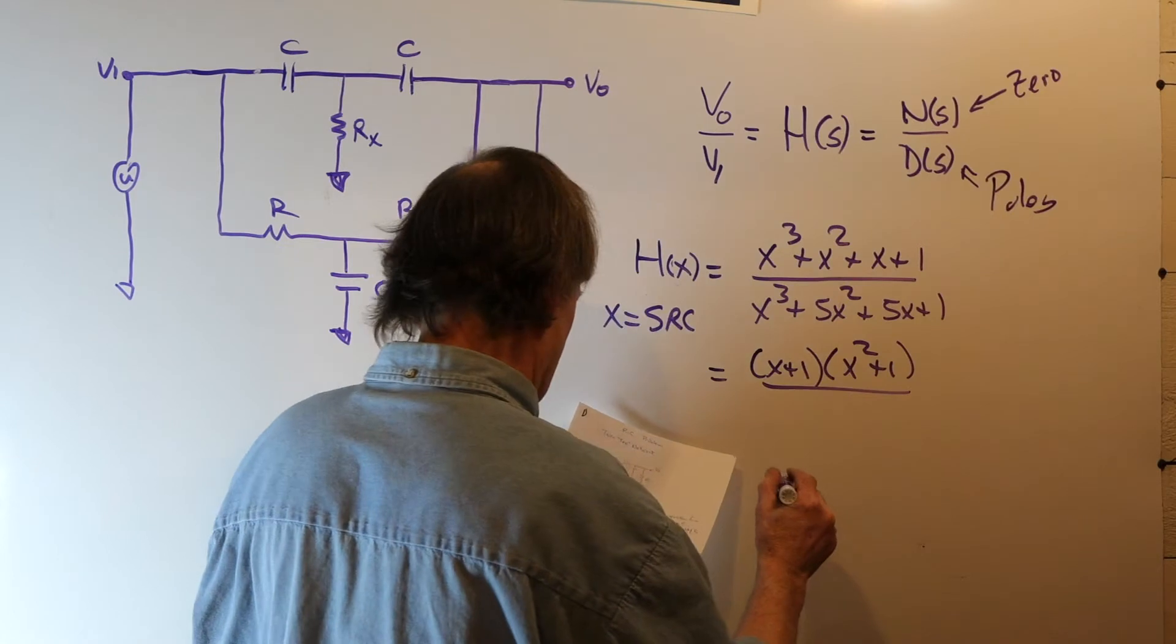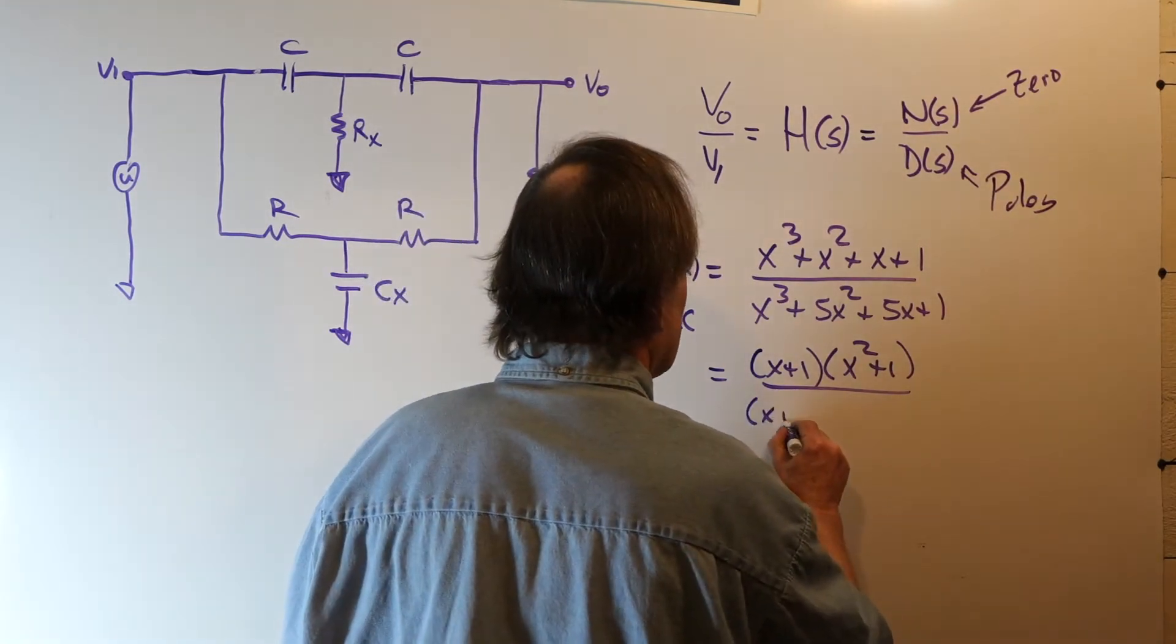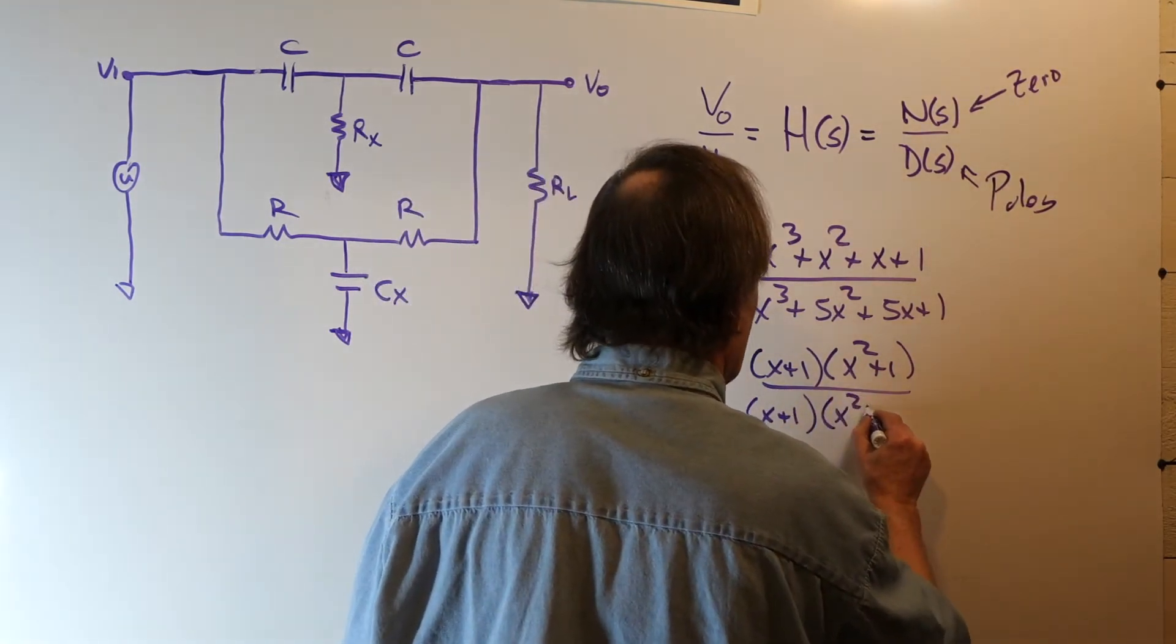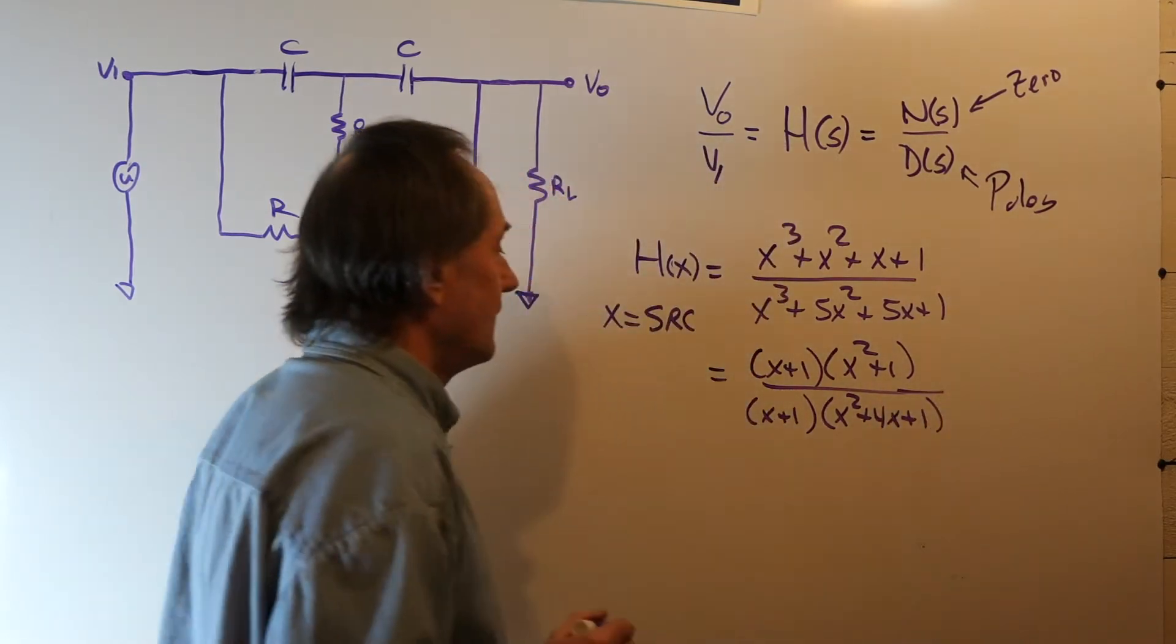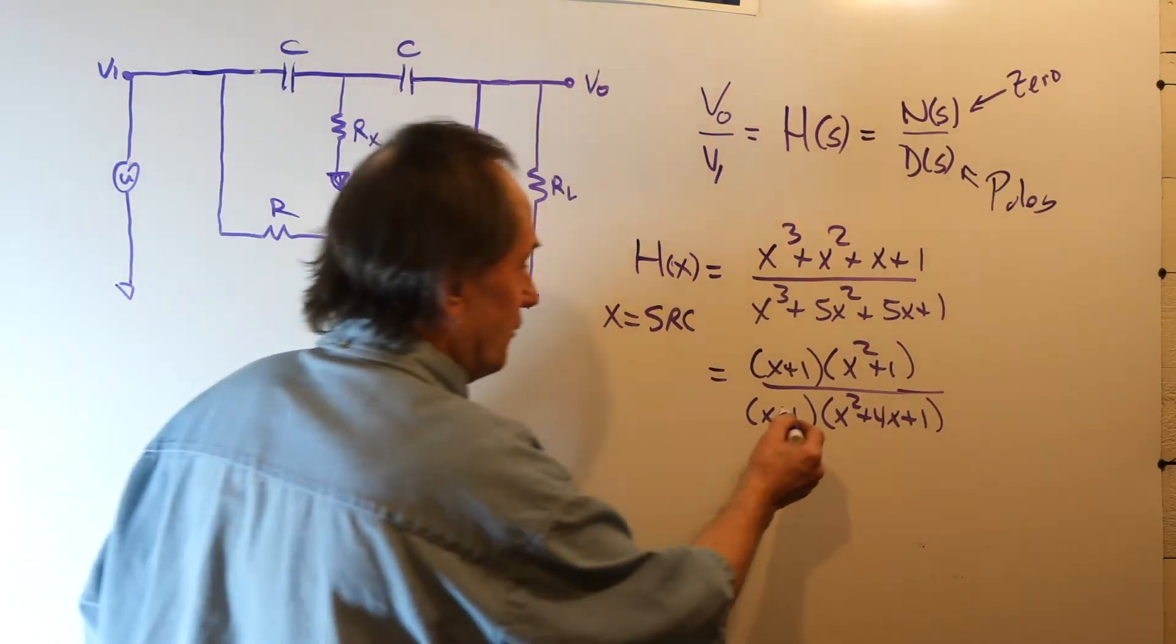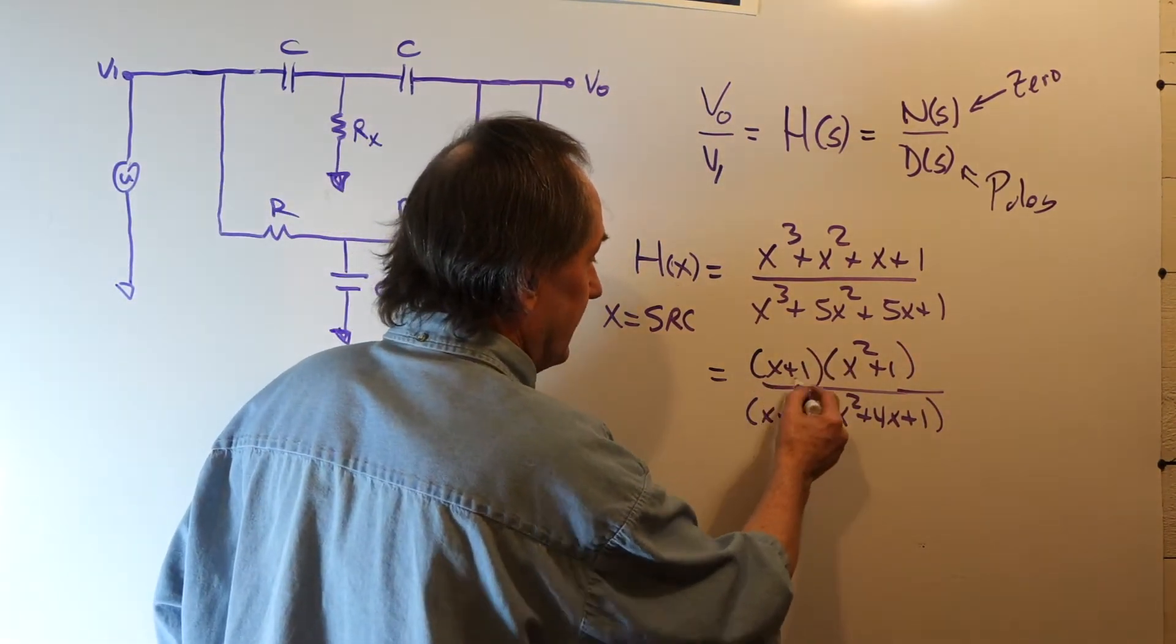And the denominator can be factored as X plus 1 times X squared plus 4X plus 1. And notice what happens here. We get what's called a pole zero cancellation.